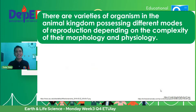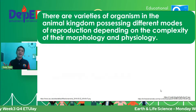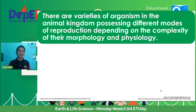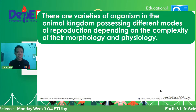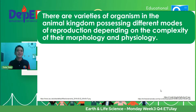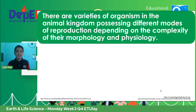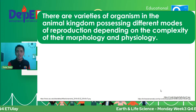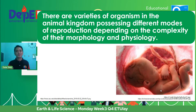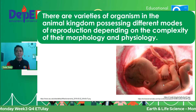Perpetuation of life. There are varieties of organisms in the animal kingdom possessing different modes of reproduction. Iba-iba kung paano magreproduce ang organism, depending on their habitat and primarily on their organs or body parts, whether they are simple or complex, and depending on the complexity of their morphology and physiology. For us humans, kailangan ng sperm at egg para maform ang zygote and eventually magiging fetus, mag-develop inside the uterus of the female organism. That's how mammals generally reproduce.